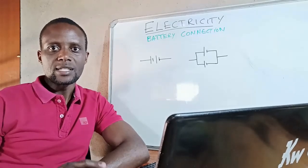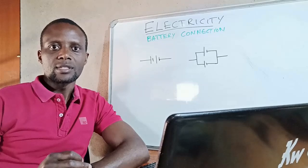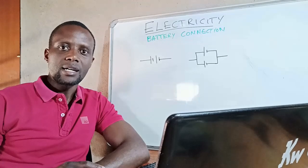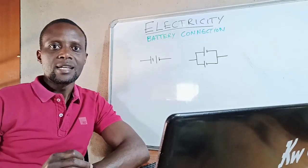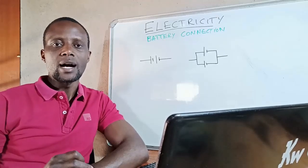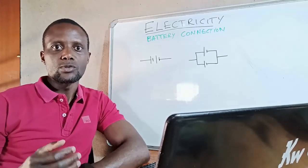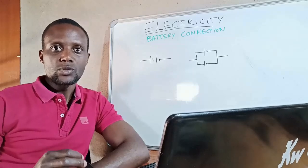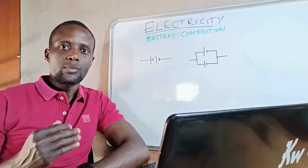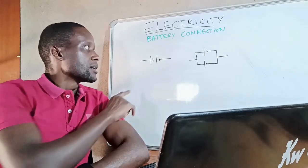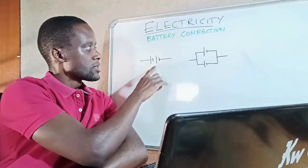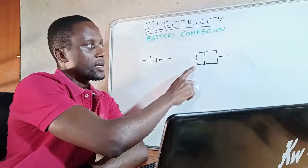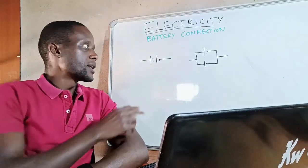In this video we'll just try to understand how batteries can be connected — either in series or in parallel. Remember what I said: with electricity you need to understand what type of connection you have. Do not just jump into analyzing; the first step is to know whether it is a parallel or a series connection. Here on the board we have two cells connected in series and two cells connected in parallel.